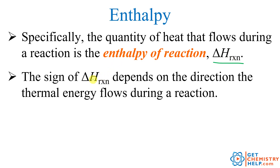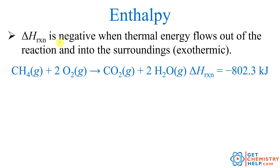The sign on the enthalpy of reaction depends on the direction thermal energy is flowing — into or out of the reaction. If delta H is negative, as in this reaction where we see it's negative 802.3, that tells us thermal energy is flowing out of the reaction. In this case, methane reacting with oxygen produces carbon dioxide gas and water, releasing heat.